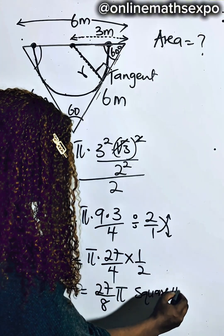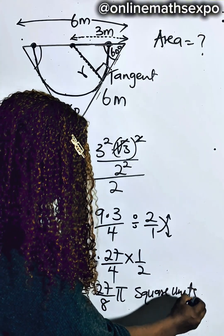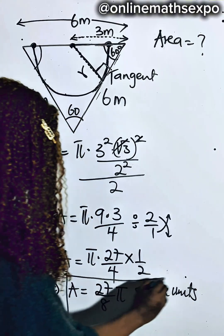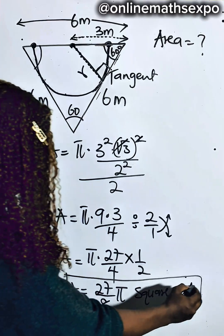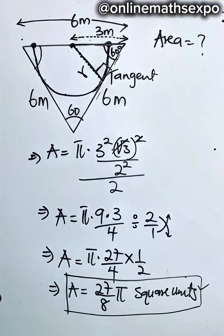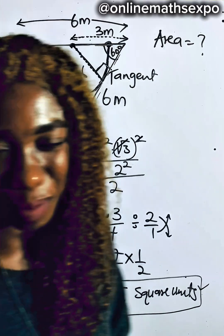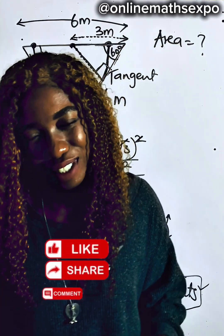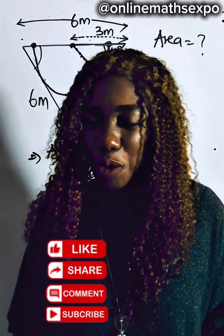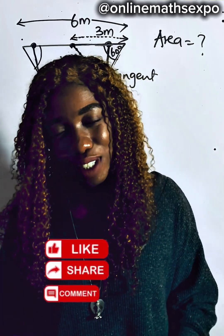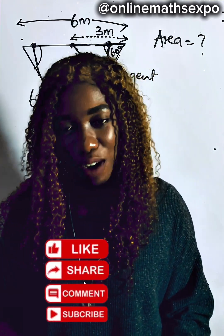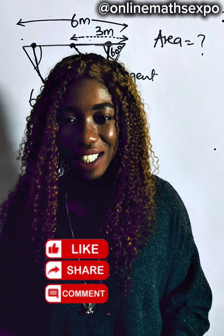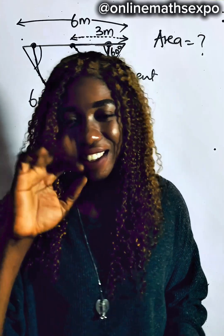So the area of this particular semicircle is 27π/8 square units. I hope you learned something — don't forget to like and share this video. I'd also be curious to see your own method. Thank you and bye.